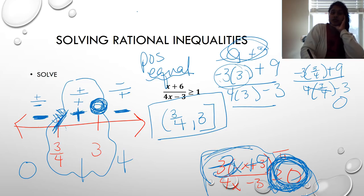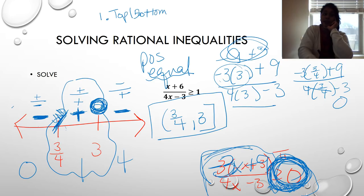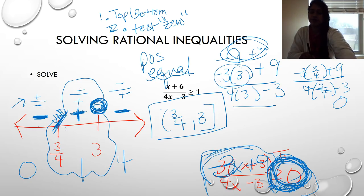The biggest difference between rational and polynomial inequalities: with rationals, you test both the numerator and denominator. Even when plugging back in, test both top and bottom. Also, you must test your critical points — they're not always true zeros. Sometimes they're undefined. If you had written two brackets, you would have had the incorrect answer.